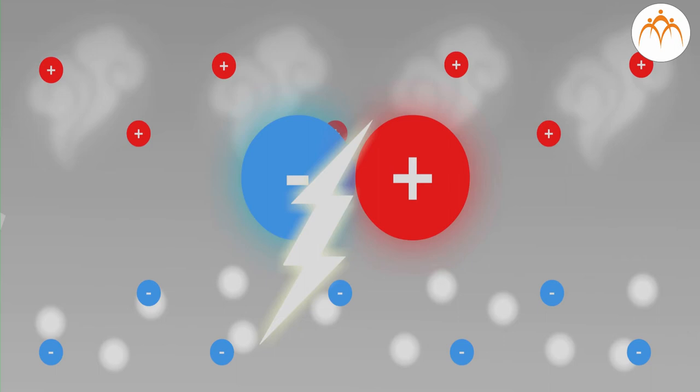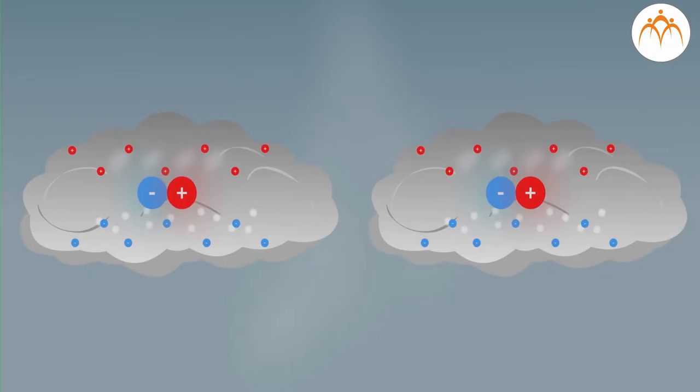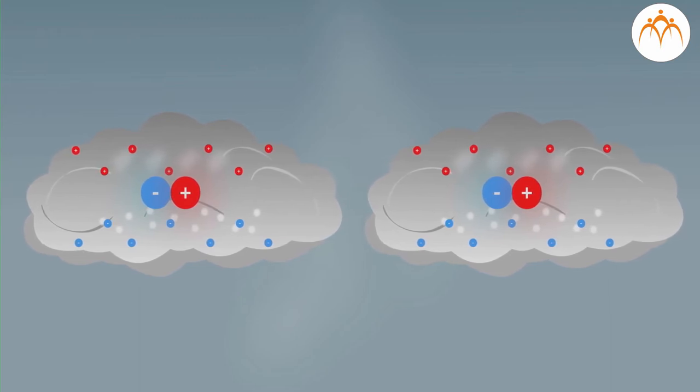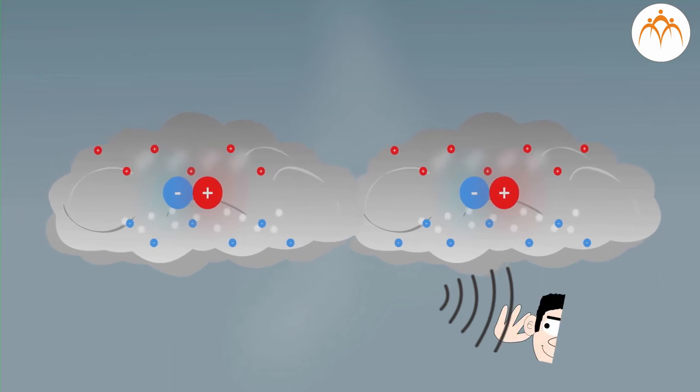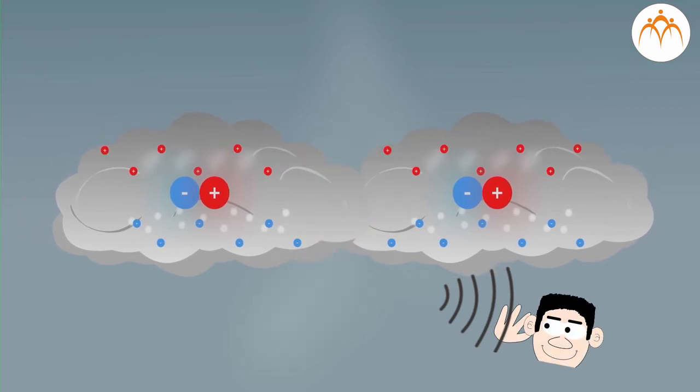When two charged clouds come together, lightning occurs in between those clouds. We can hear loud noise and thunder when this type of lightning occurs. This is the second type of lightning.